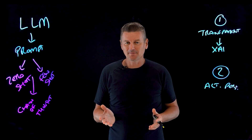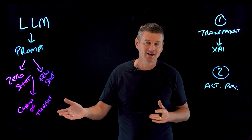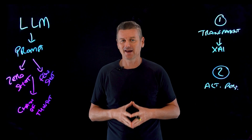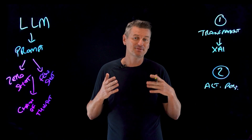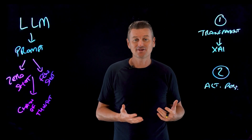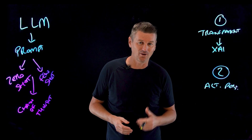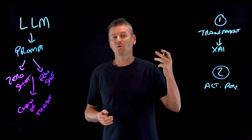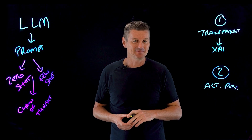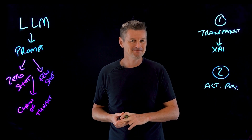Ultimately, few-shot prompting and chain of thought prompting are powerful techniques that can improve the quality of responses generated by large language models. By providing the model with additional context, examples, or guidance, users can help the model better understand the task at hand and generate more accurate, relevant, and well-reasoned responses — and keep better track of how many golf balls we're juggling. If you have any questions, please drop us a line below, and if you want to see more videos like this in the future, please like and subscribe.